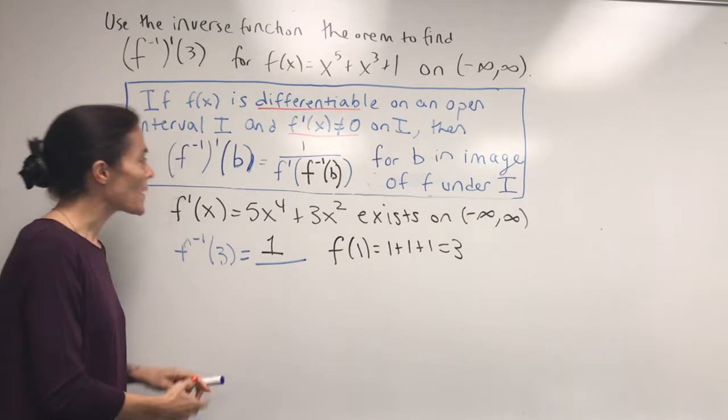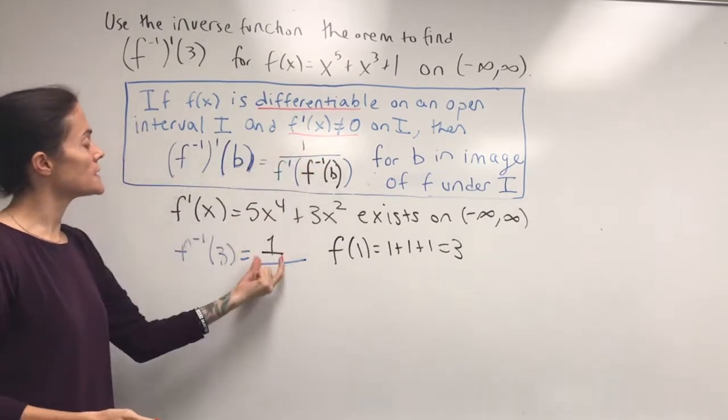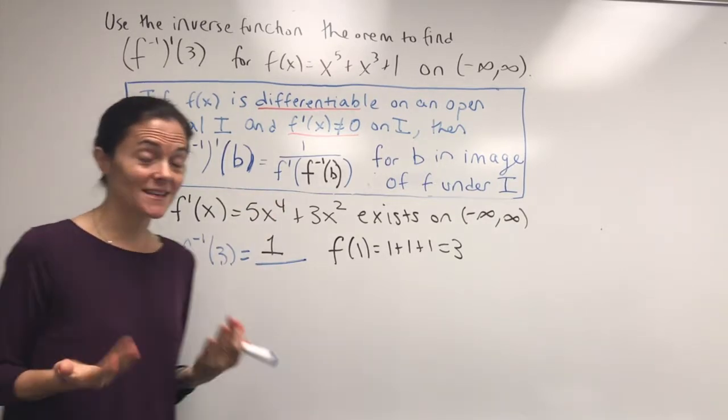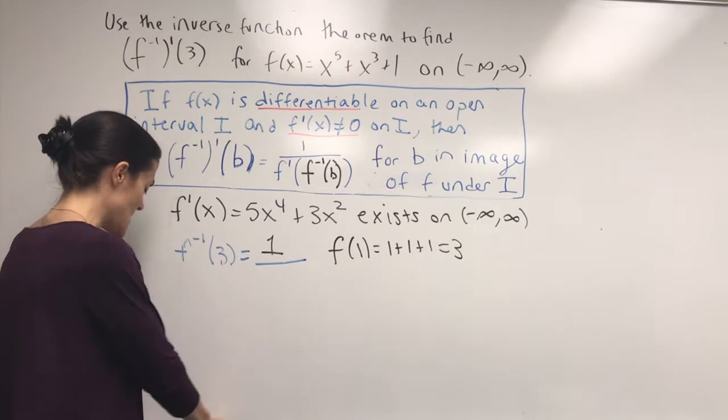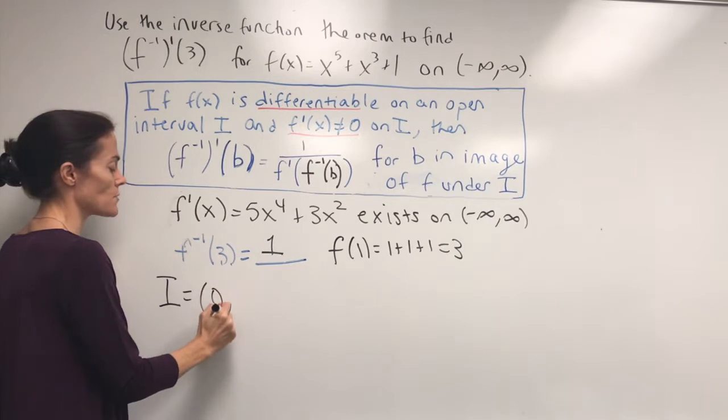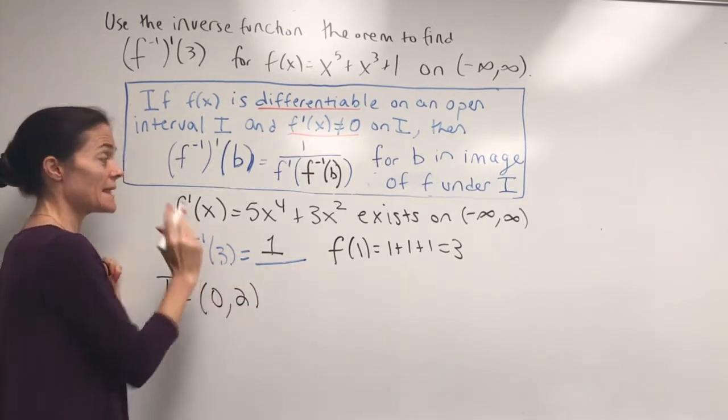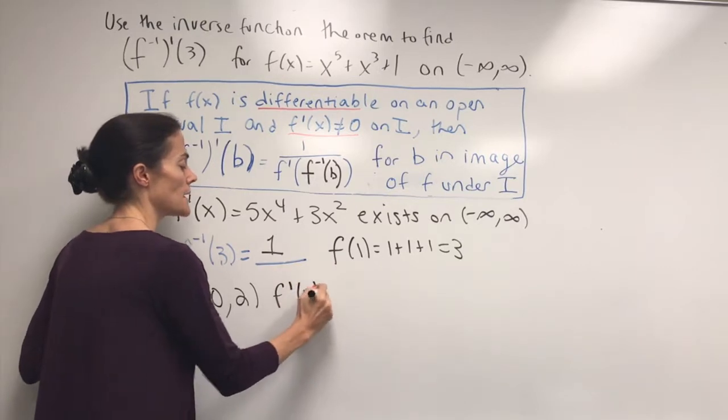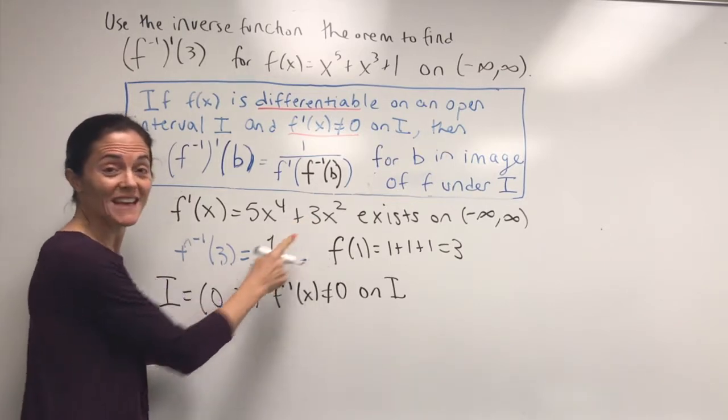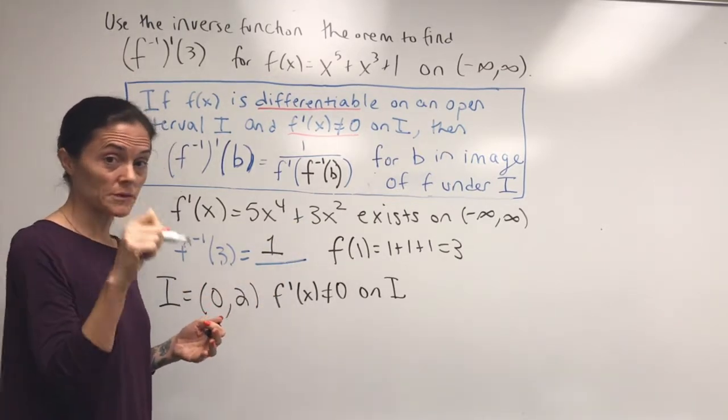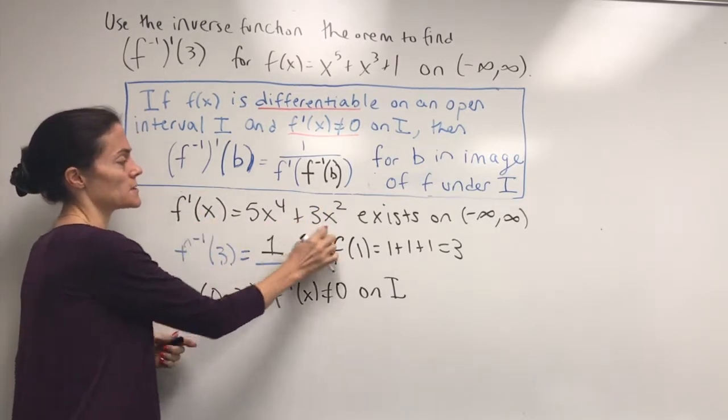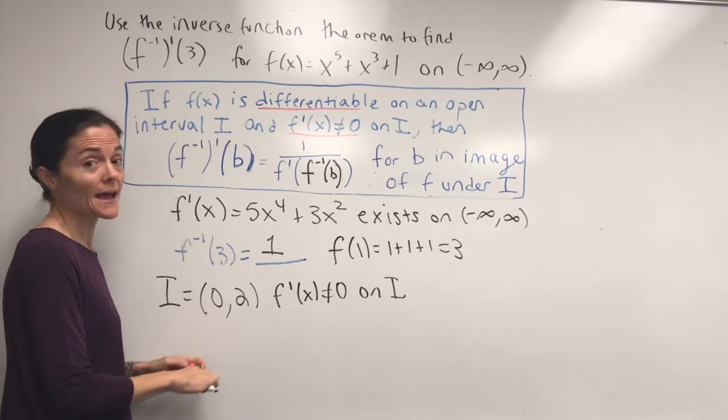Okay, so now comes the time where we can find an interval containing 1 that avoids where the derivative is 0 if we want to apply this theorem exactly. So let's take i to be maybe 0 to 2. It's an open interval. And then you see f prime is not equal to 0 on i because this function, you can tell by looking at it, it's always greater than or equal to 0 because we have even powers. And the only time it equals 0 is when x is 0, and that's not in my interval.